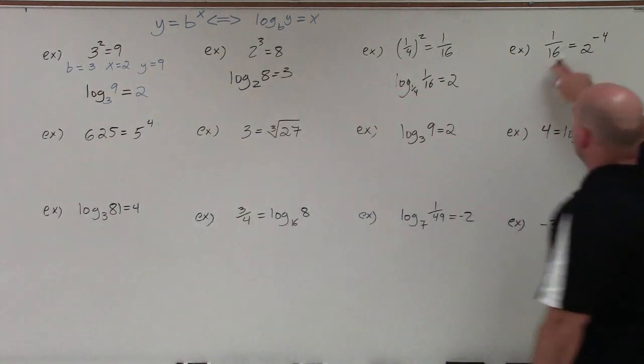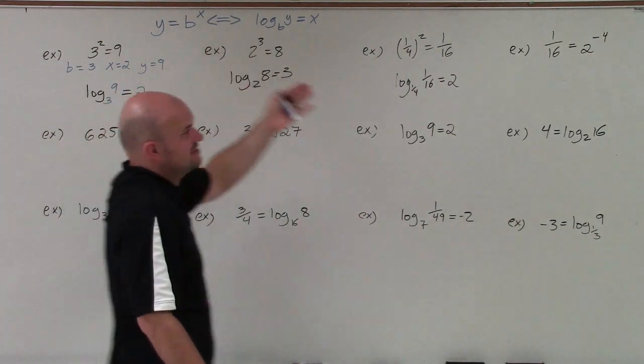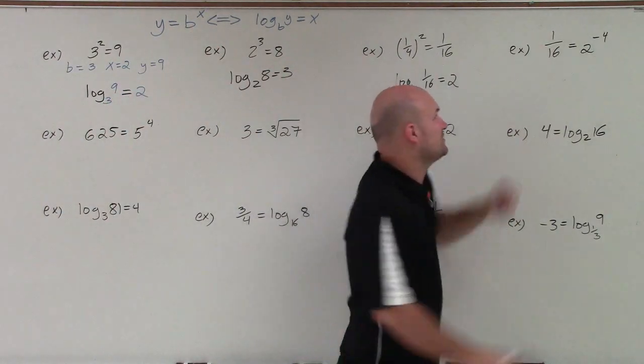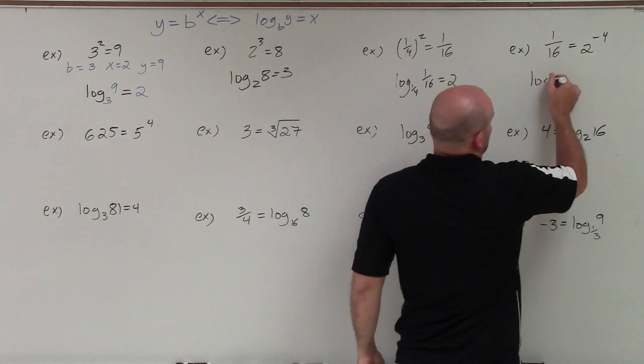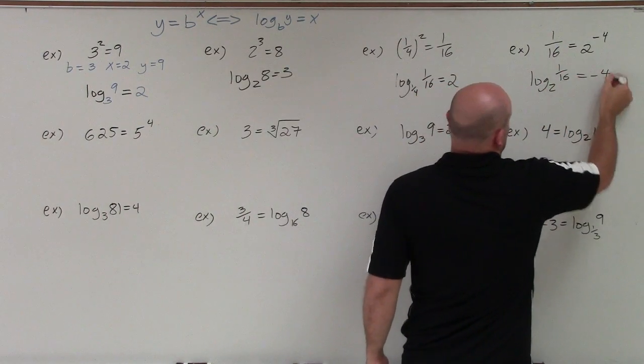Then over here, now my base is on the right hand side. But that's OK. It doesn't have to be. It can look just like this. You notice your base of your exponent's over here, too. So it's going to be log base 2 of 1/16 equals negative 4.